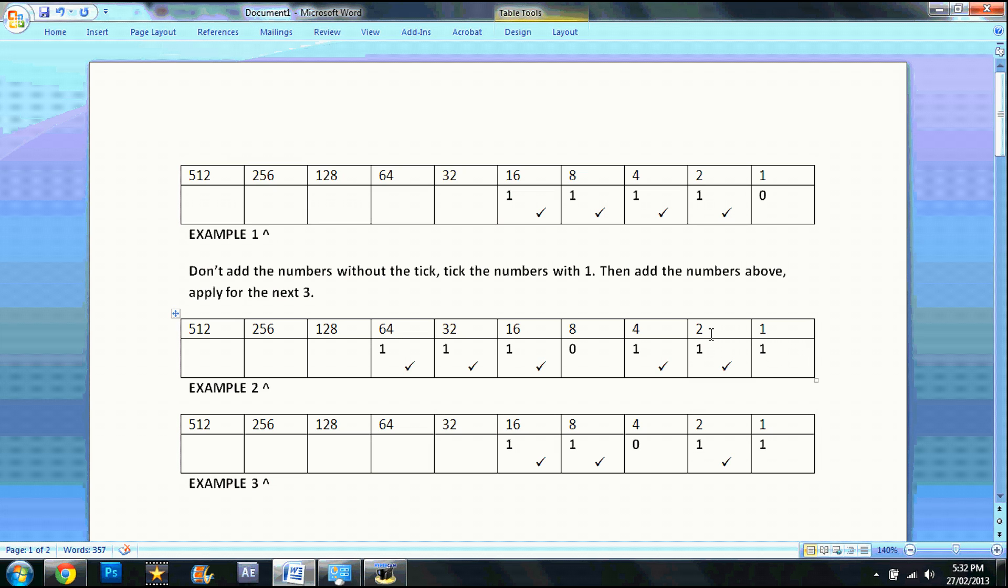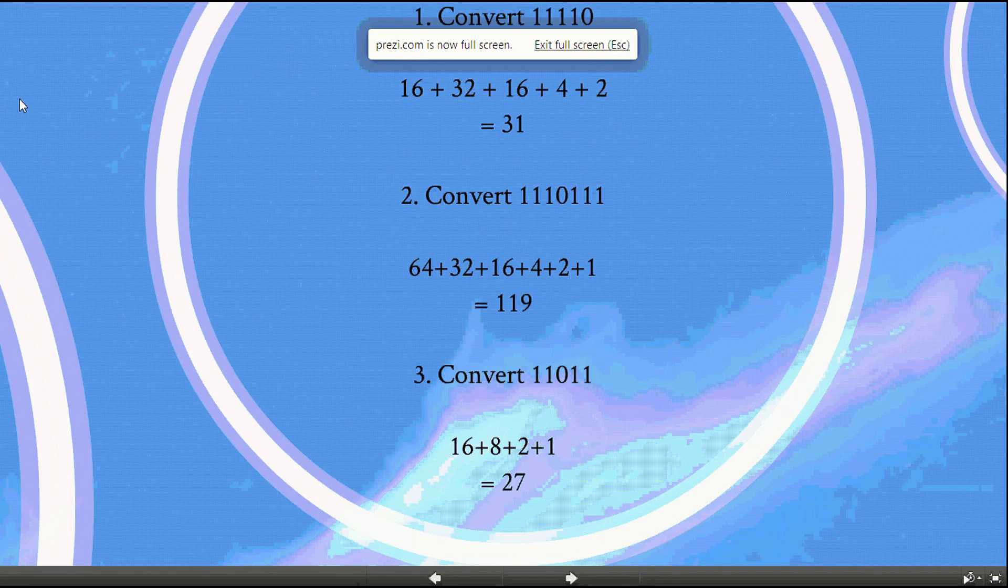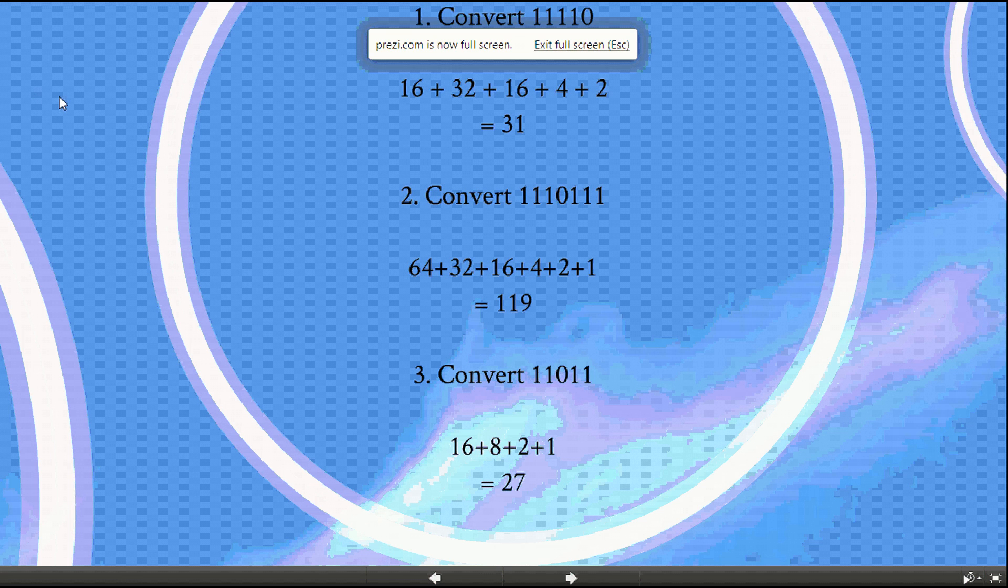So you would have to add 64, 32, 16, 4, 2, and 1 because every 1 you have to tick it and add it. Ignore the 0. So that would be 119.